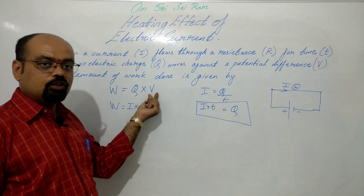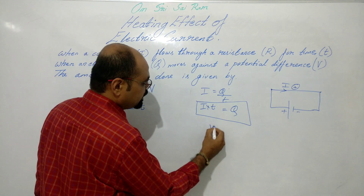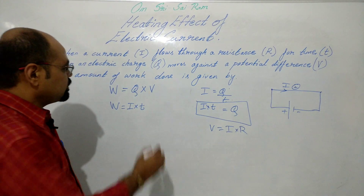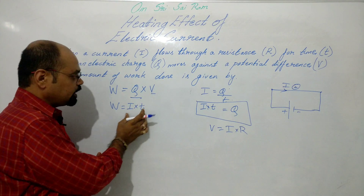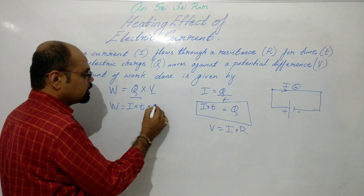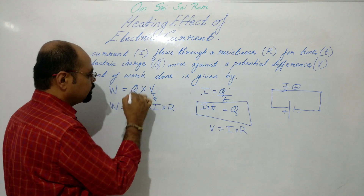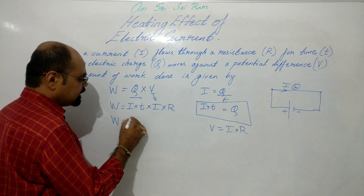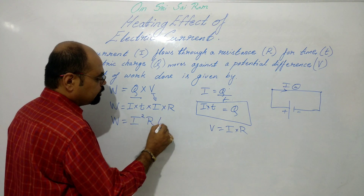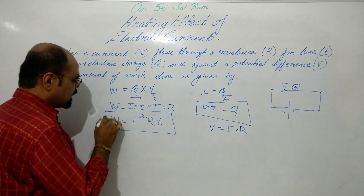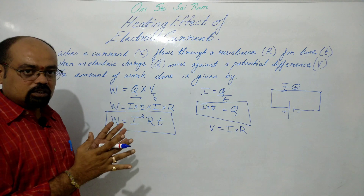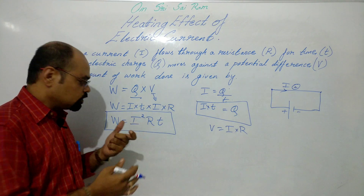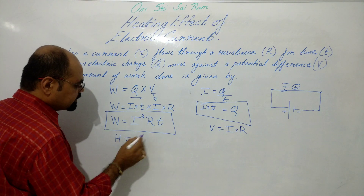Work done W = Q × V. In place of Q we substitute I × T. According to Ohm's law, V = I × R, so in place of V we substitute I × R. Therefore, work done W = I × T × I × R = I²RT. So work done is completely transformed into heat energy.